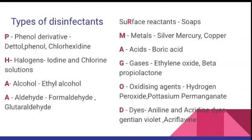For iodine, the examples are Betadine and tincture iodine, which we use in hospitals. For chlorine, chlorinated lime is used in hospitals as well as in community settings. A represents alcohol — ethyl alcohol and isopropyl alcohol are commonly used disinfectants in hospital settings, around 60 to 90 percent concentration. The other A is aldehyde, which has two types: formaldehyde and glutaraldehyde. Formaldehyde — you all know about the formalin solution used to store anatomical parts.